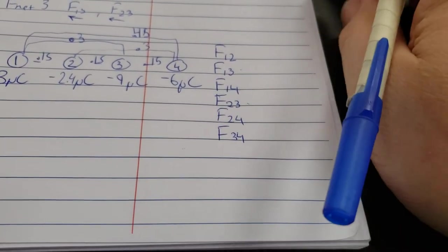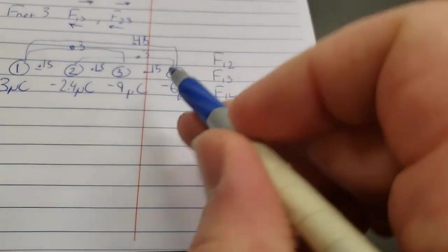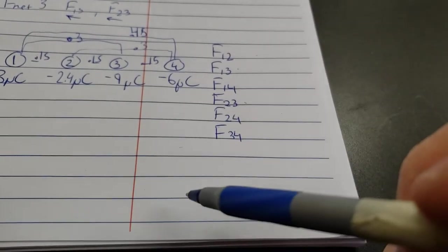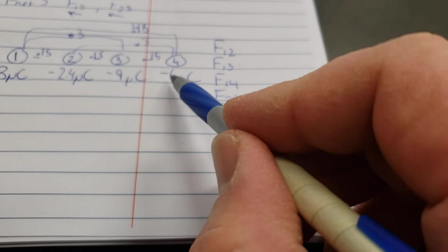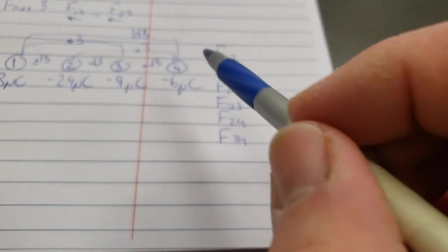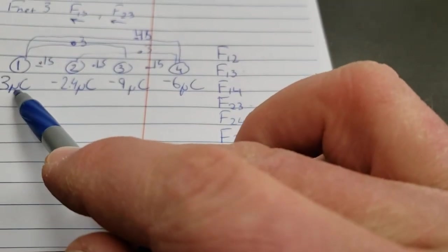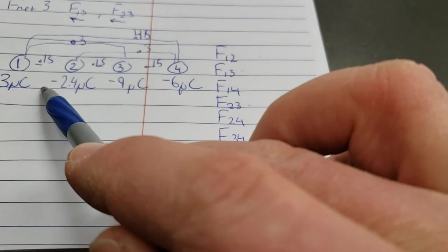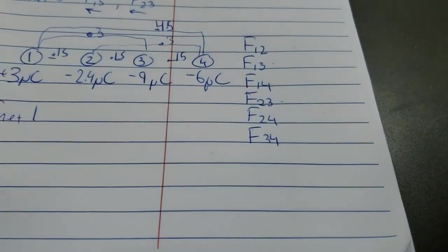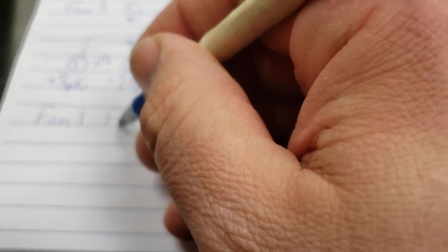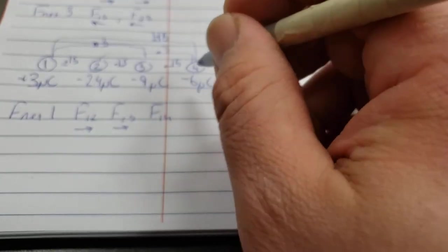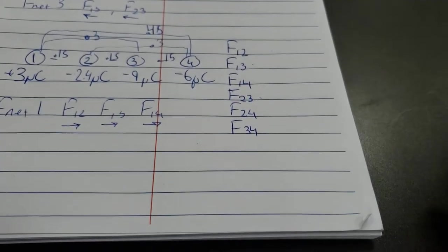And what you would do is the exact same thing we just talked about. You would solve for all 6 forces, and then we have to take these numbers and do some comparisons. We have, if we're looking at the net force acting on, let's see, they say the 3 charge, that's this guy, so number 1. So force net for number 1. Force 1, 2, it's going to be attractive. The negative is going to pull on the positive, it's going to pull it to the right. Number 3 is negative, it's going to pull it to the right. Number 4 is negative, it's going to pull it to the right. And so we'd add those up.